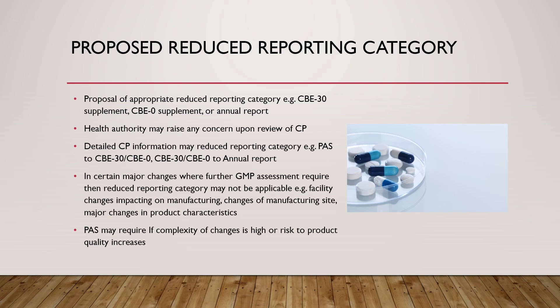A detailed comparability protocol may reduce the reporting category — for example, from prior approval supplement to CBE-30 or CBE-0, or from CBE-30 or CBE-0 to annual report. In certain major changes where further GMP assessment is required, the reduced reporting category may not be applicable. For example, facility changes can impact manufacturing, changes of manufacturing site, or major changes in product characteristics. Prior approval supplement may be required if the complexity of changes is high or risk to product quality increases.